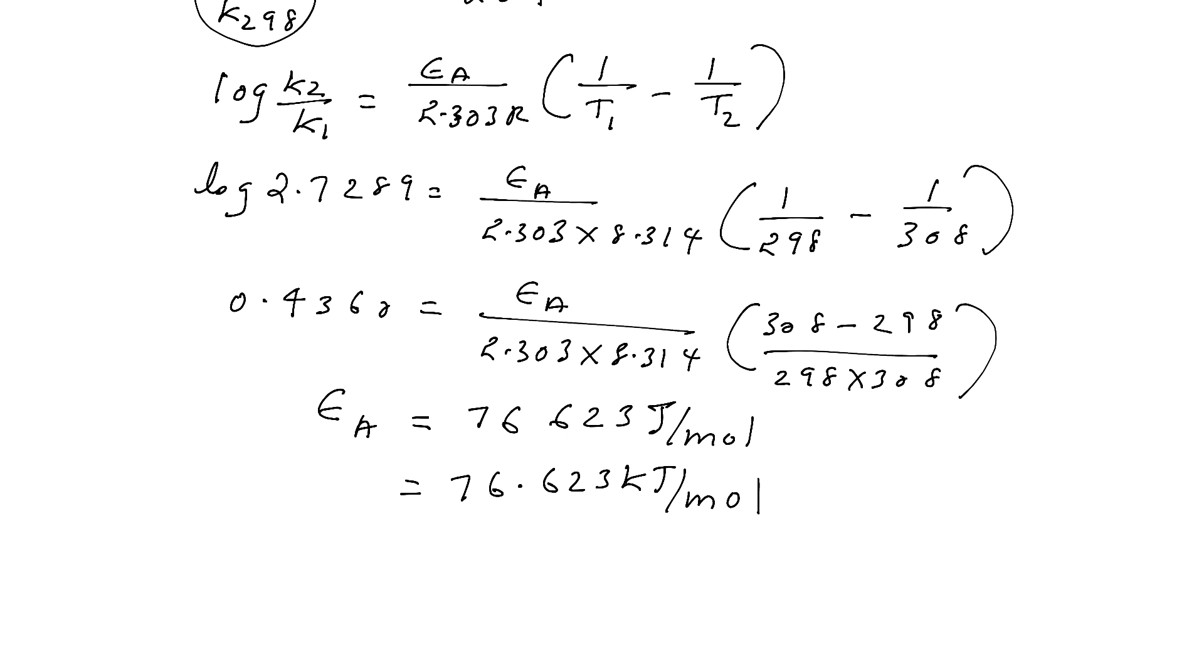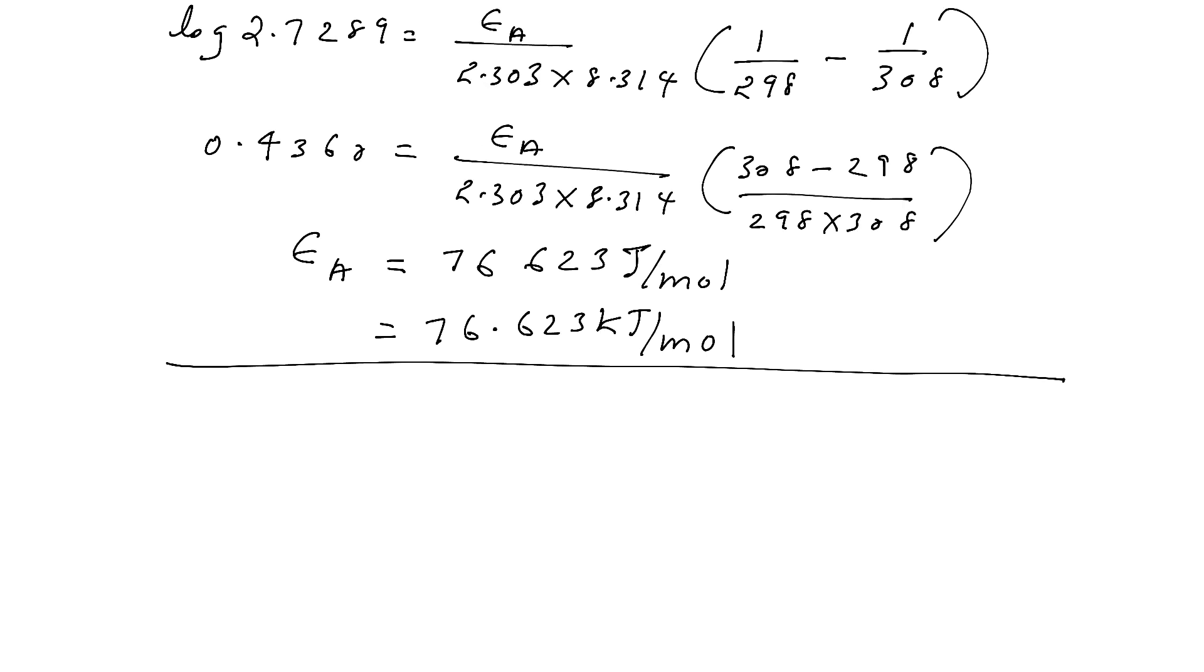Hope all of you understand. Now one more task is there. You have to find rate constant k. See, the log form of Arrhenius equation, what is that? Log k is equal to log A minus Ea by 2.303 RT. See, you must know the log form of Arrhenius equation. Now what are we supposed to find? k. Substitute all other values.